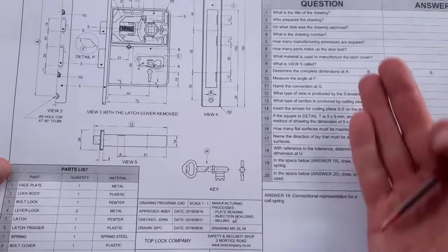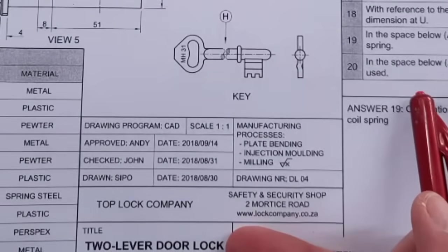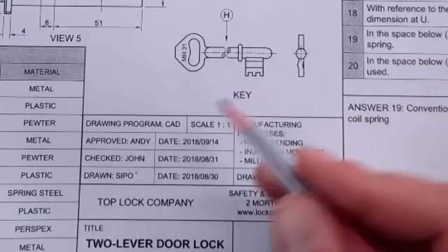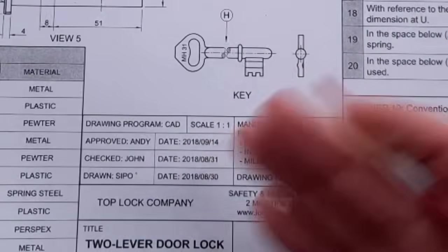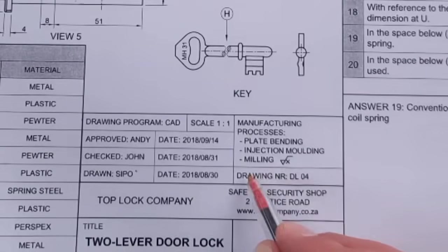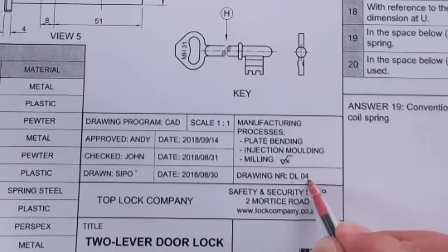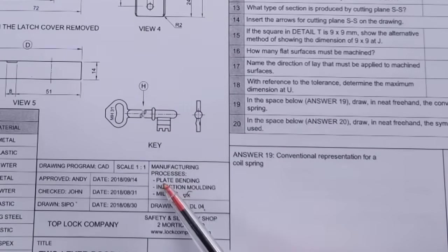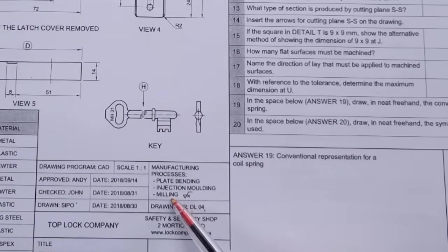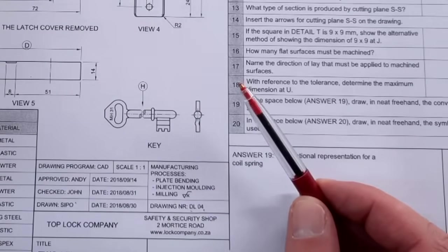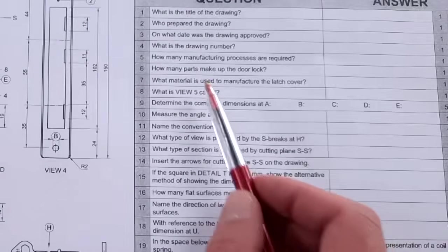Let's look at the first one. What is the title of the drawing? Two-lever door lock. Who prepared the drawing? Drawn by Sipo. On what date was the drawing approved? Approved by Andy. You see how I'm just reading this off? It's marks given to you. What is the drawing number? It's going to be found here: drawing number DL04. How many manufacturing processes are required? It's right here: manufacturing processes - plate bending, injection, and milling. So if you can read, you can absolutely achieve.